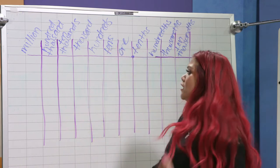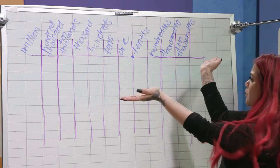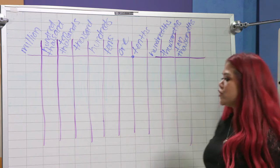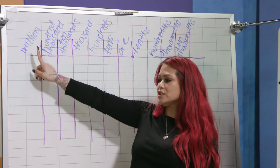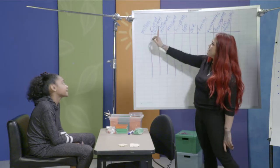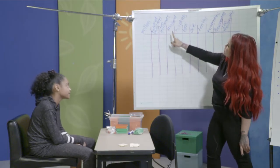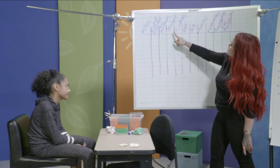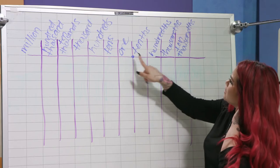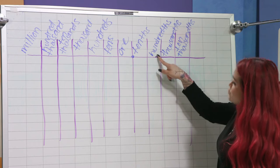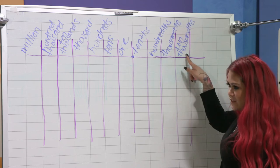Let's now choral read all our place values on the chart, starting with whole numbers. Million, hundred thousands, ten thousands, thousands, hundreds, tens, ones — then tenths, hundredths, thousandths, and ten thousandths.